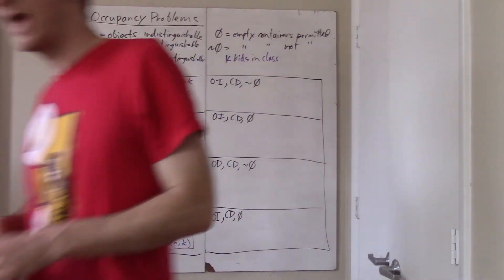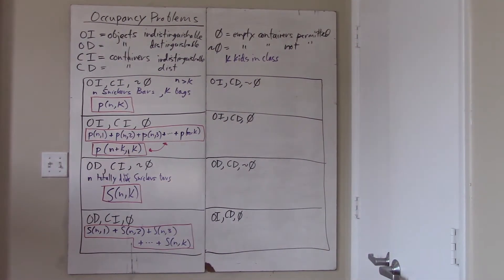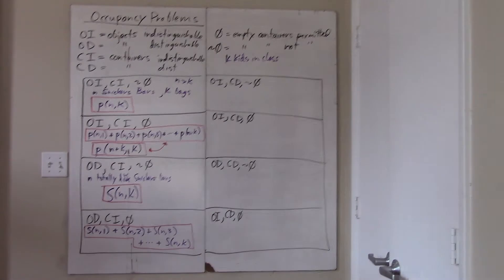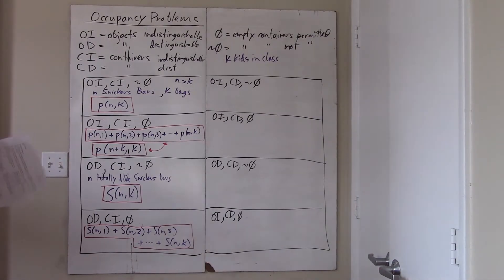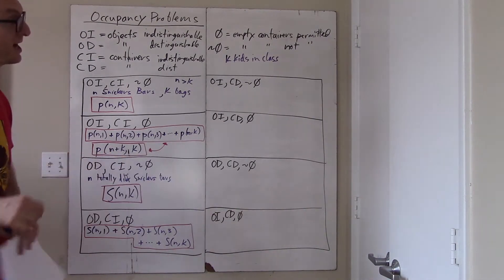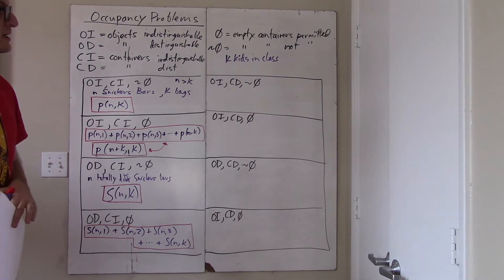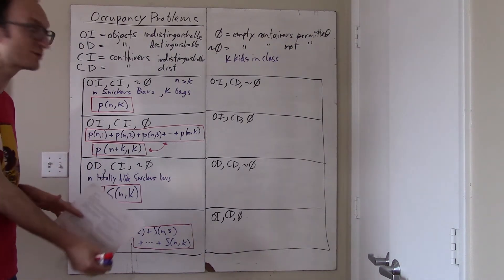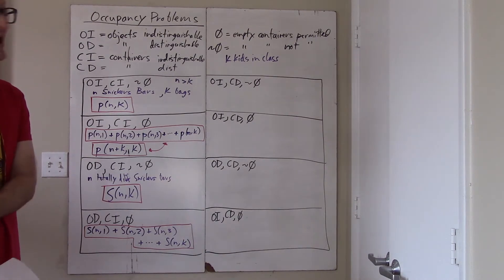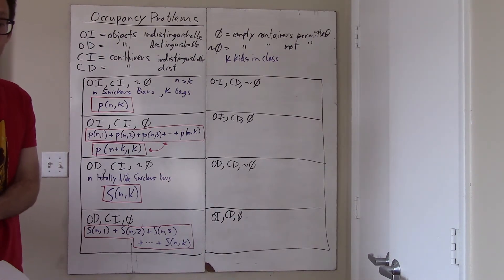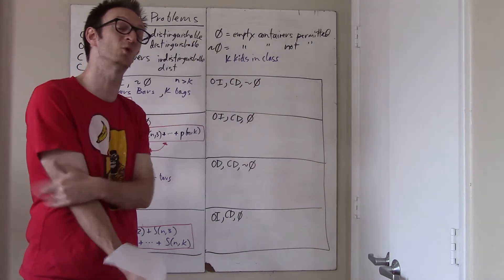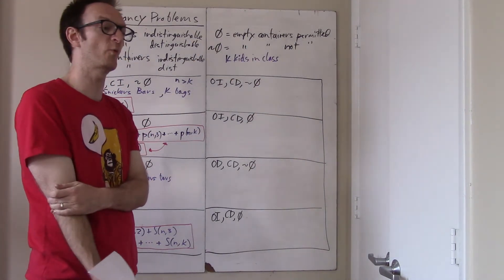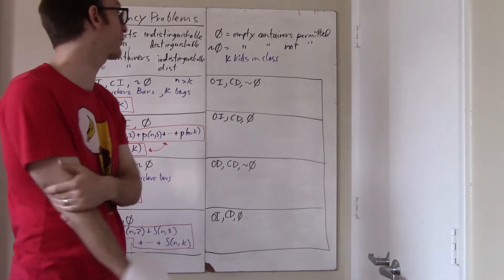For this second column, we have become not the cafeteria worker, but now we are the kindergarten teacher. In other words, now we have a different candy bar disbursement protocol in which the candy bars are delivered in a big pile to the teacher, and the kindergarten teacher is going to divide up the piles — actually hand the objects to the students. So now which person gets which bag is therefore highly relevant.